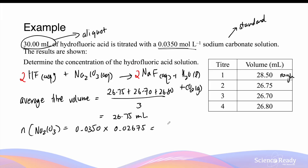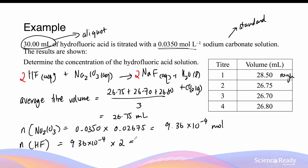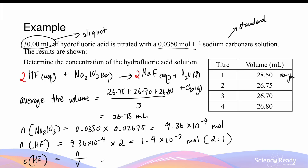This gives roughly 9.36 × 10⁻⁴ moles of sodium carbonate. The moles of hydrofluoric acid is therefore 9.36 × 10⁻⁴ multiplied by 2, which is roughly 1.9 × 10⁻³ moles — due to a 2 to 1 reaction ratio. Finally, the concentration of HF is equal to the number of moles divided by the volume of the solution: 1.9 × 10⁻³ divided by 0.03 litres, giving 0.0624 mol per litre.